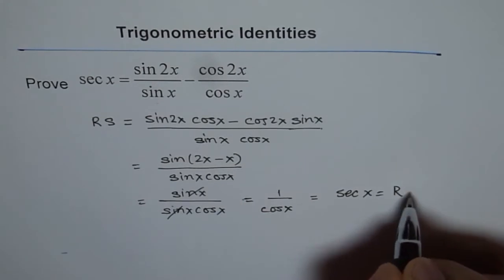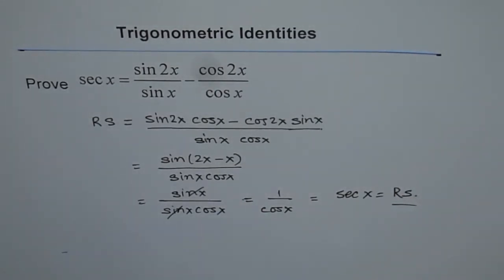And that is the right side. So, hence, we have proved that sin 2x over sin x minus cos 2x over cos x is secant x. Thank you.